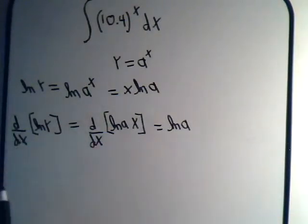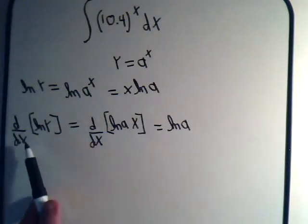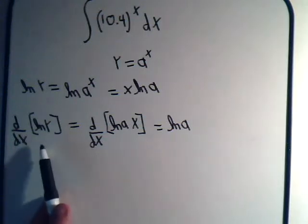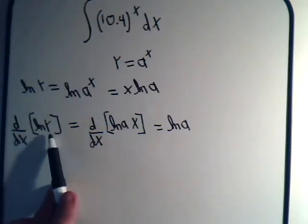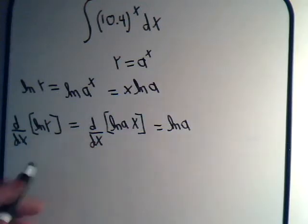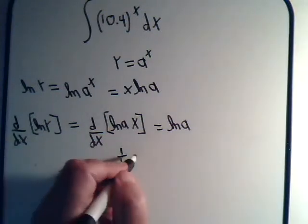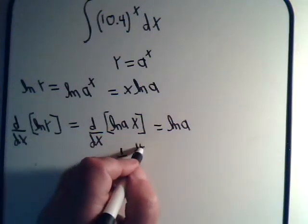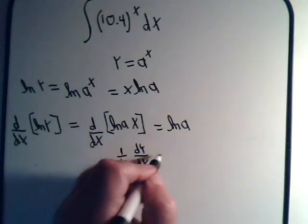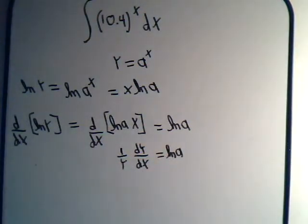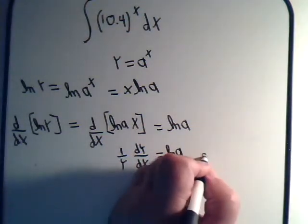Now to go back to this side, the derivative of the natural log of y is where we use our chain rule. That's equal to one over what's inside the log. So that's just 1 over y times dy/dx.